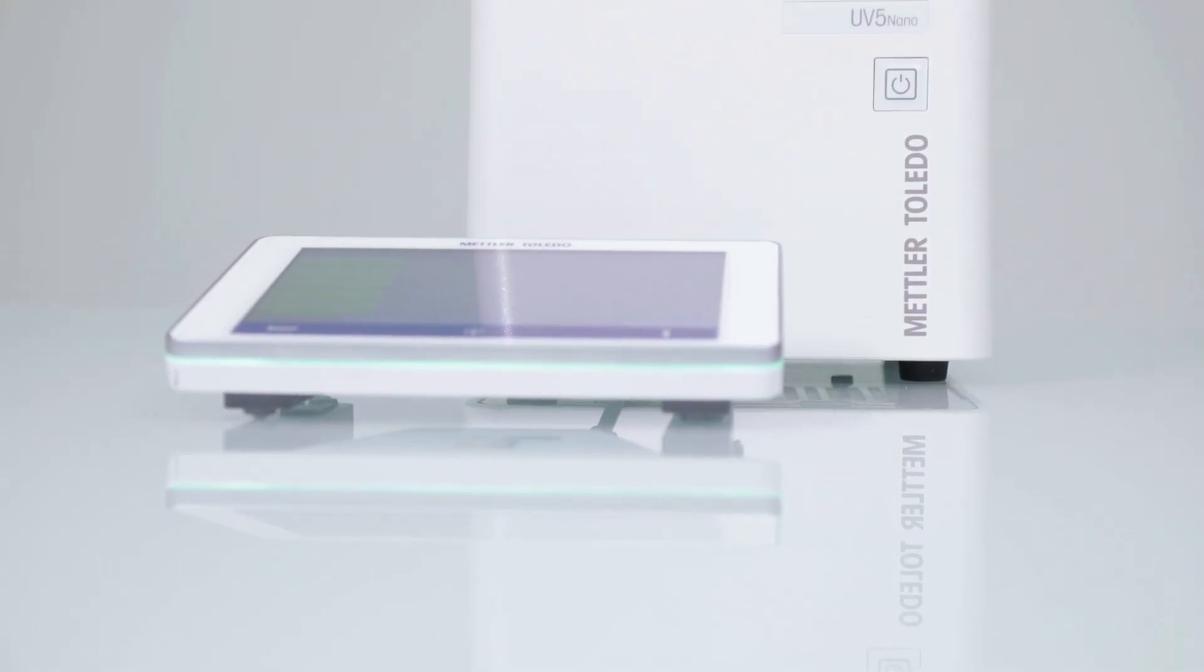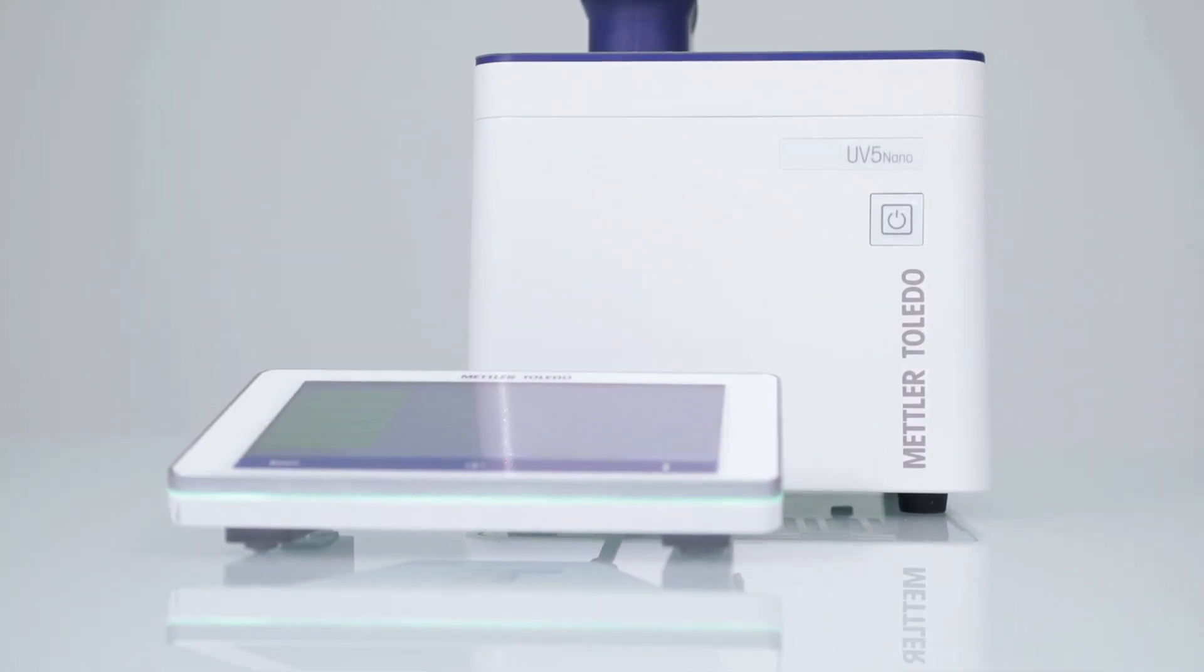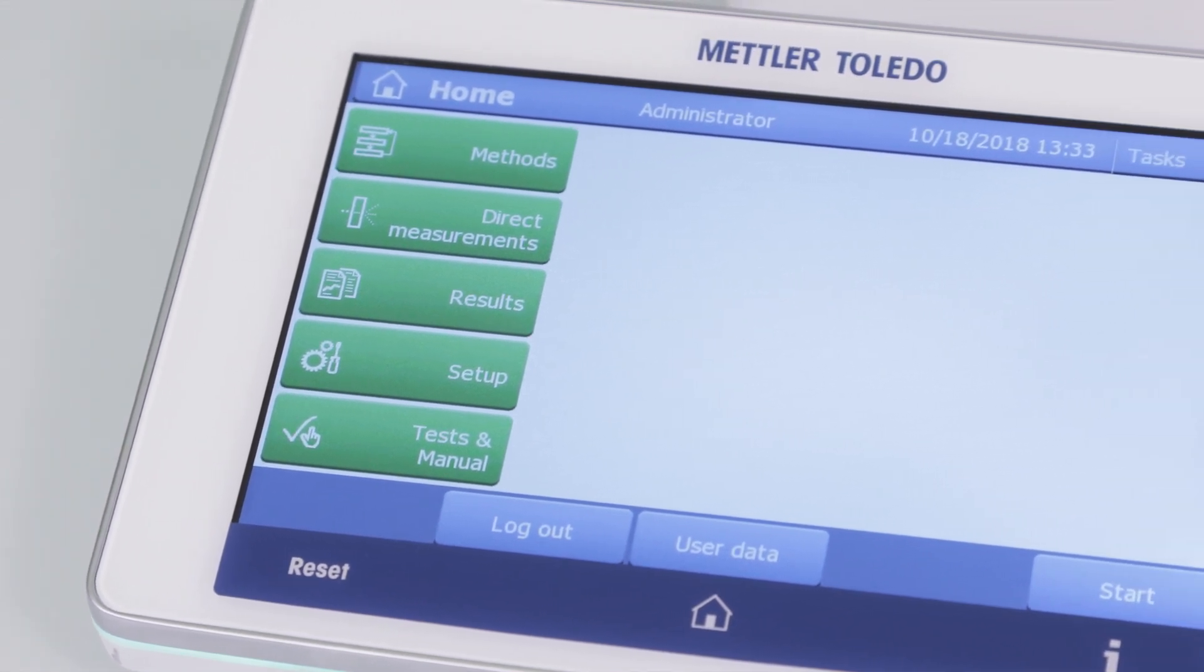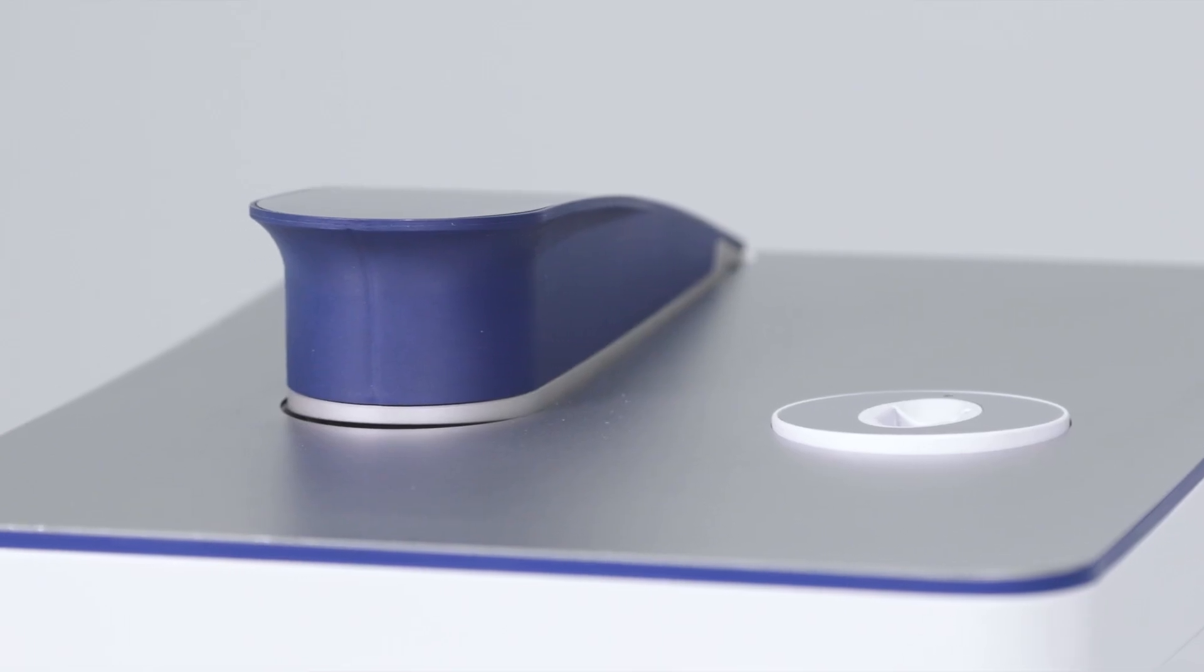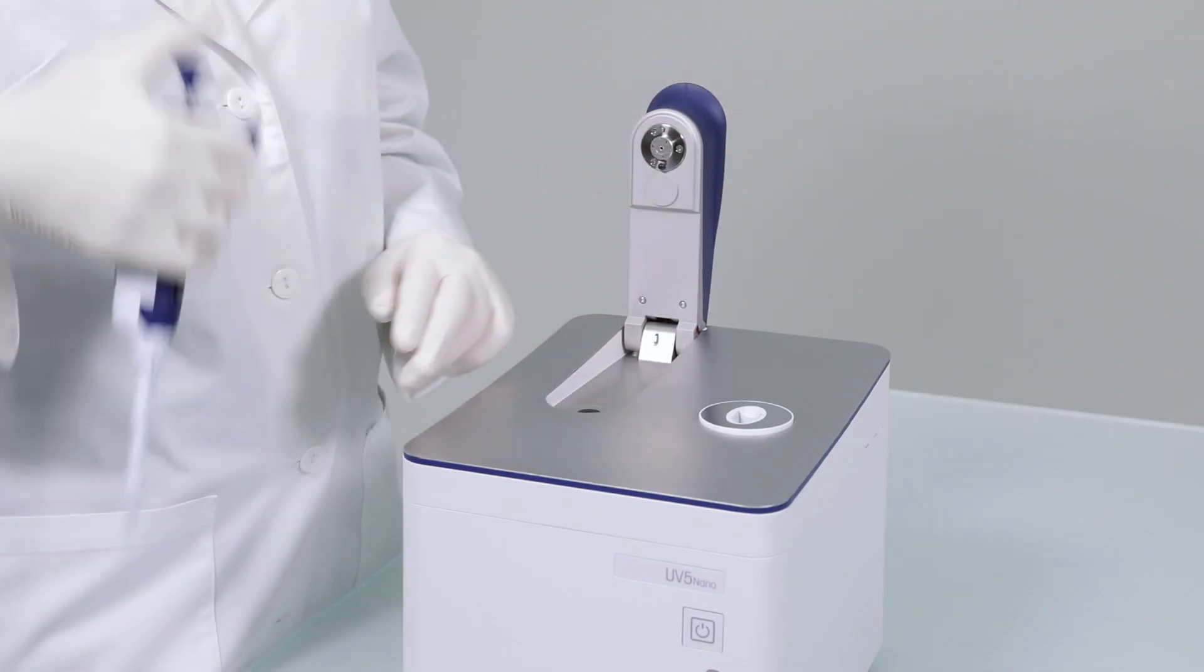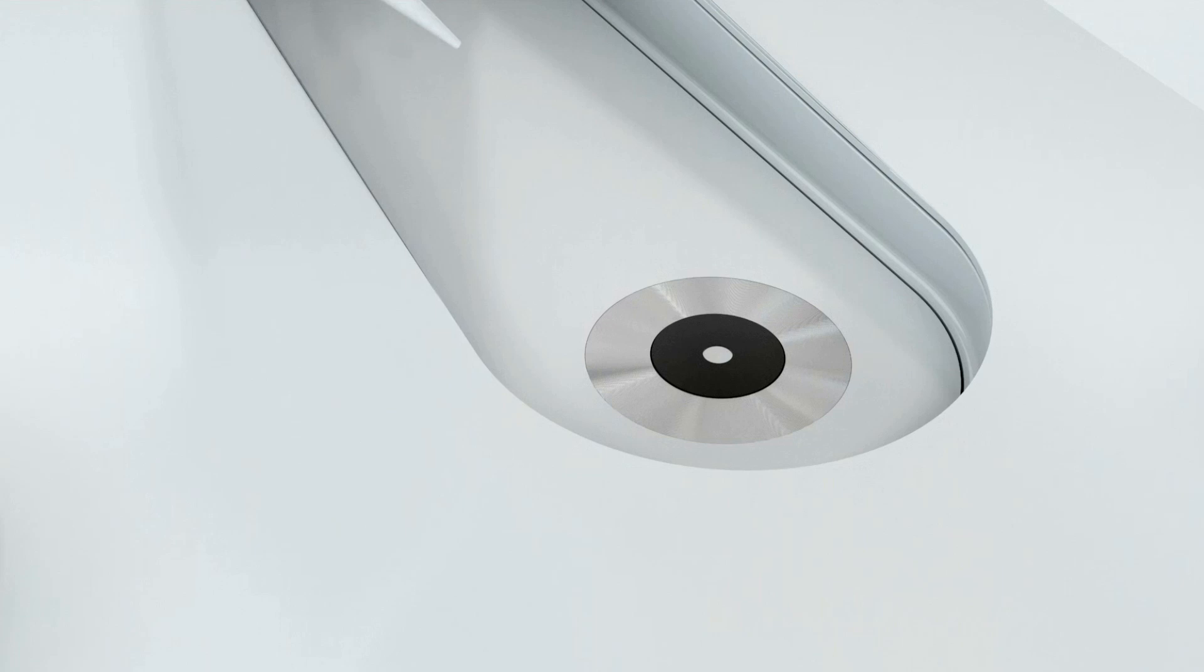The Mettler Toledo UV5 nano spectrophotometer combines two instruments in one for both micro-volume and standard cuvette measurements. With this instrument, we can pipette a tiny amount of sample directly onto the platform. Only one micro-litre is required for reliable measurements.